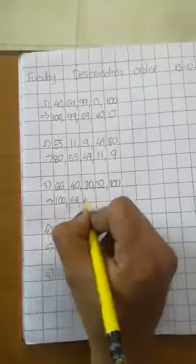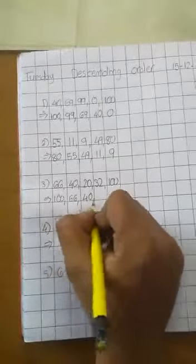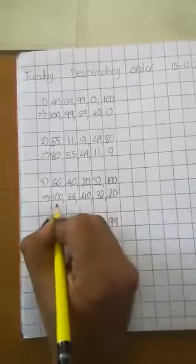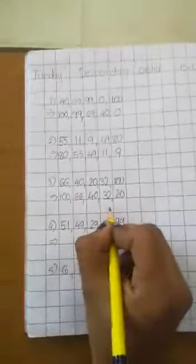66. 66 before? 40. 44 before? 32. 32 before? 20. 100 is bigger number. 20 is small number.